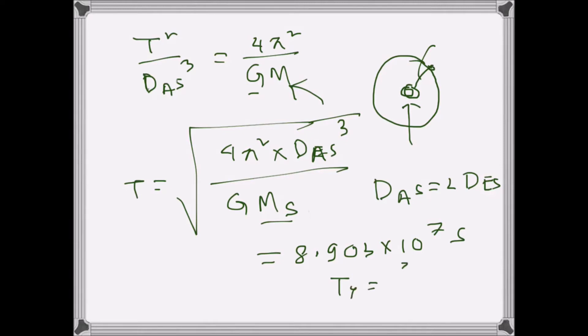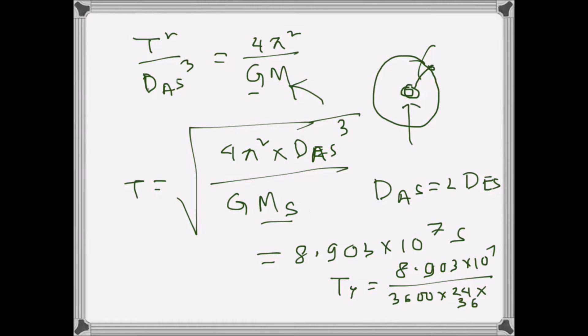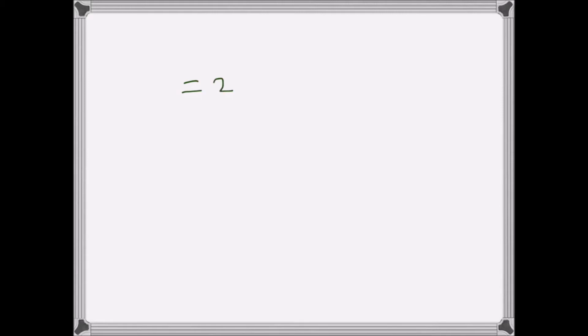To convert T into years, we divide 8.903 × 10⁷ seconds by 3600 to get hours, then divide by 24 to get days, then divide by 365 to get years. The result is approximately 2.823 years, which is the period of revolution of the asteroid.